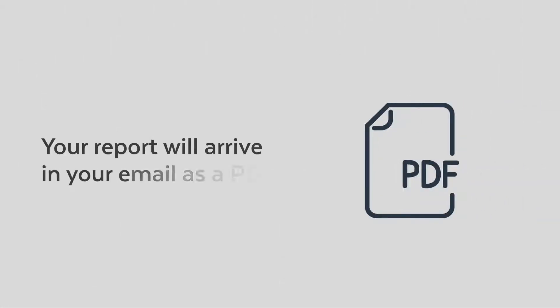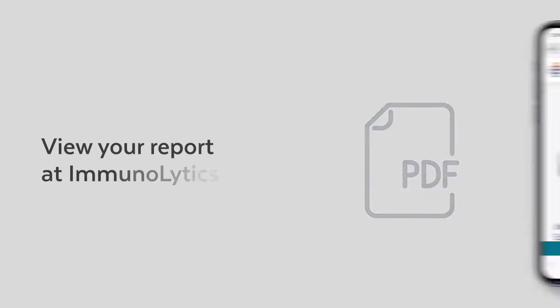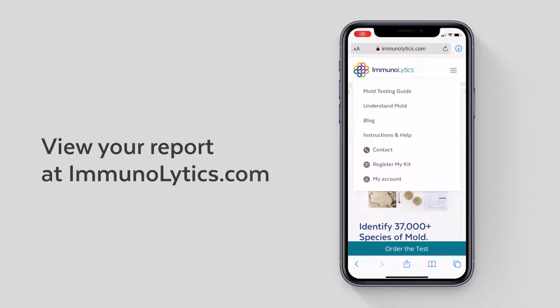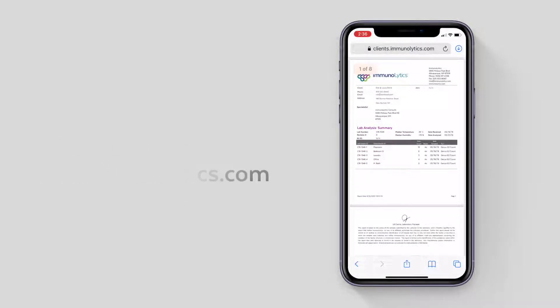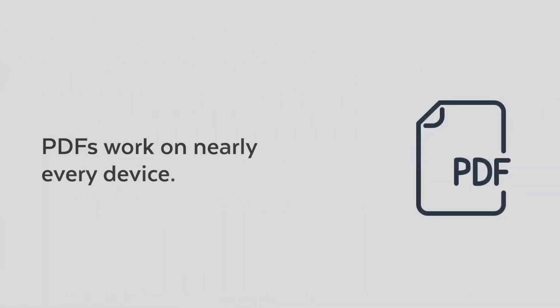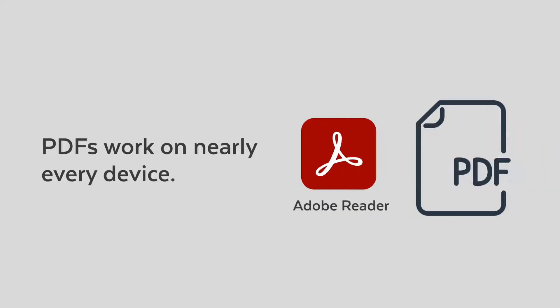As soon as your report's ready you'll receive it as a PDF attachment to an email. You can also find the report by logging into your account at immunolytics.com and then clicking on my reports. PDFs are viewable on nearly any device but if you have any trouble download the free Adobe Acrobat Reader from your App Store or search for it online.